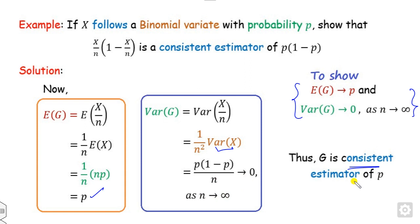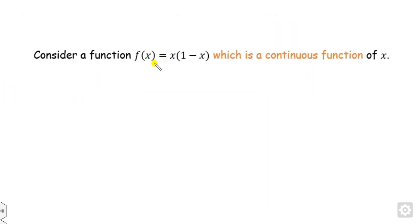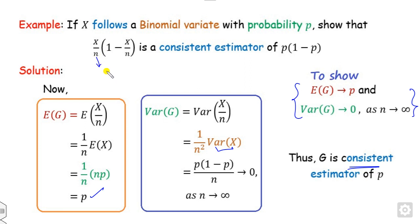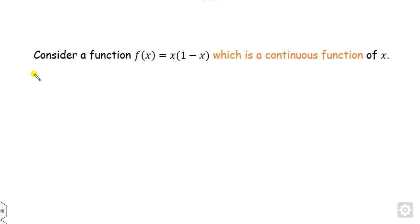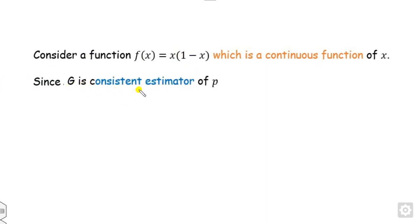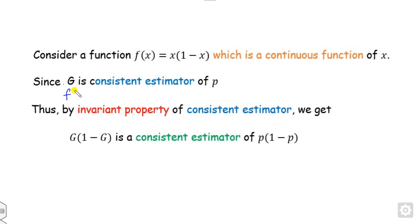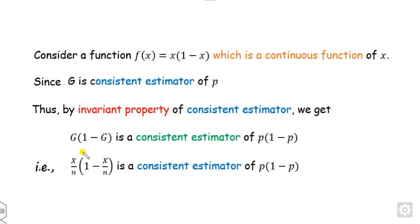Now, once we have proved that g is a consistent estimator of p, consider the function f(x) = x(1 - x). This is a polynomial, and every polynomial is a continuous function, so f is continuous. Therefore, by the invariant property, f(g) is a consistent estimator of f(p). That is, g(1 - g) = (X/n)(1 - X/n) is a consistent estimator of p(1 - p).